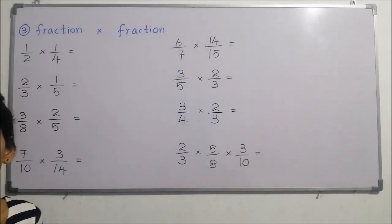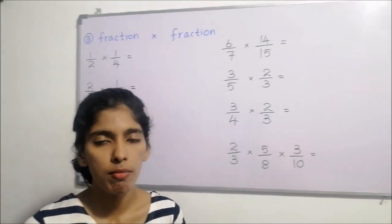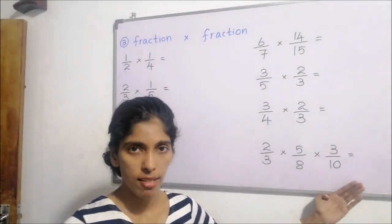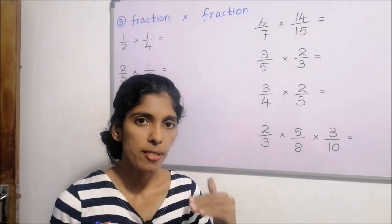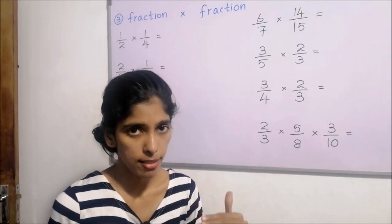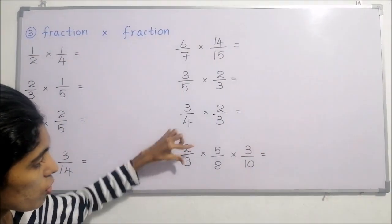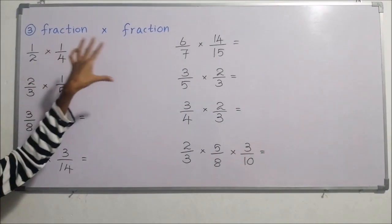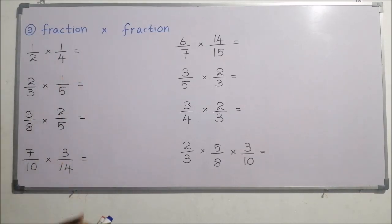Now we will learn how to multiply a fraction by another fraction. Earlier we learned fraction by whole number and whole number by fraction. For fraction by fraction, the method is the same: first check whether numerators and denominators can be cancelled out — not just within the same fraction, but also across different fractions. After that, check whether the answer is improper or proper.